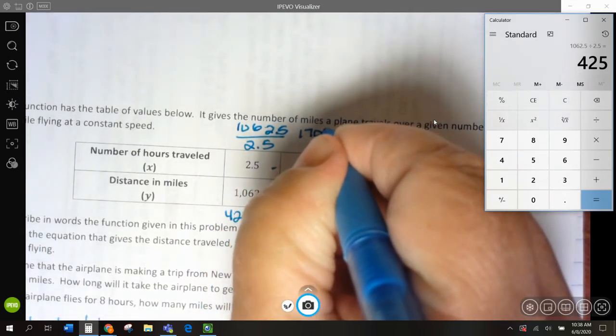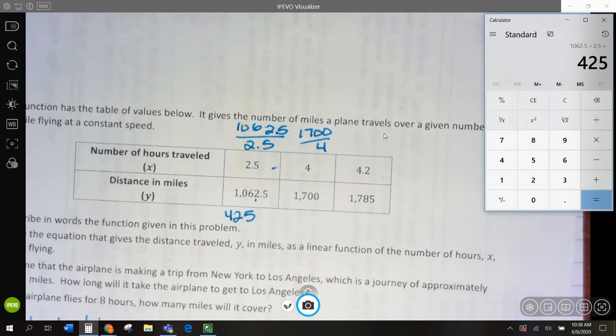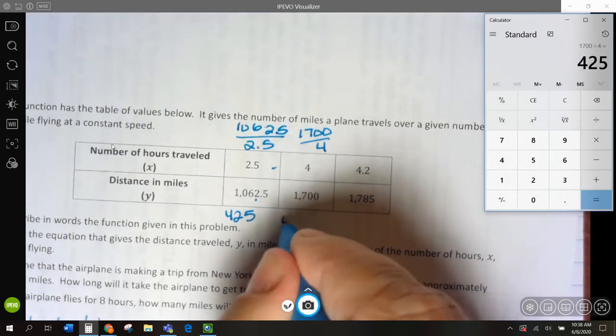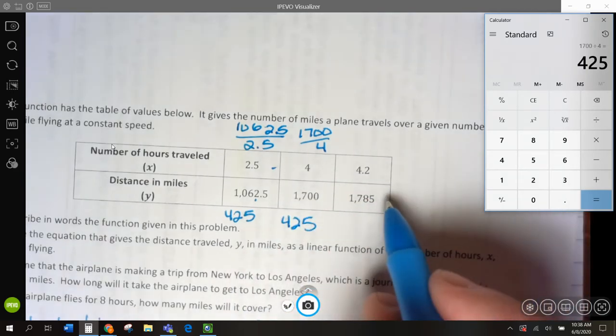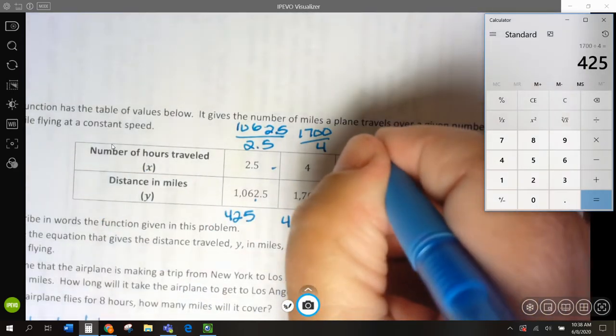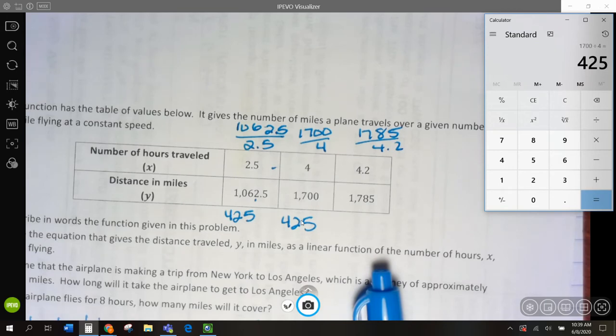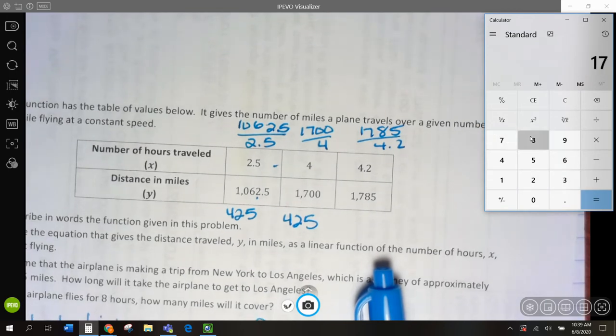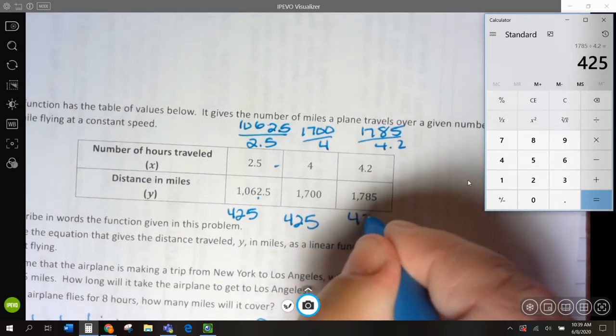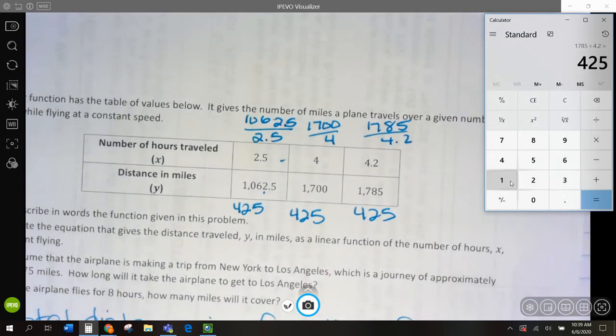Let's do this one. This would be 1,700 divided by 4. 1,700 divided by 4. 425 again. And this one, I'm sure, will be this one. Let's do it. 1,785 divided by 4.2. 425. So, our constant rate is 425.